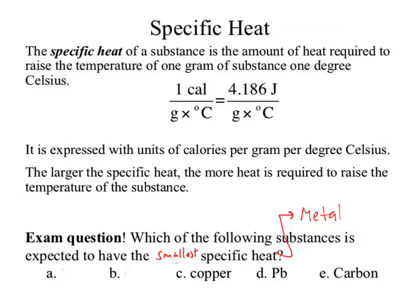Give me some answer choices that make a little more sense — nitrogen, for example. Now which one has the smallest specific heat? Copper.